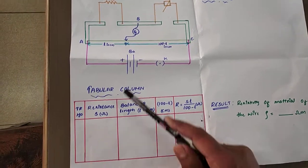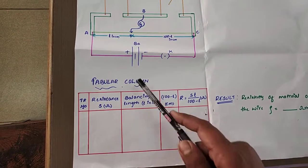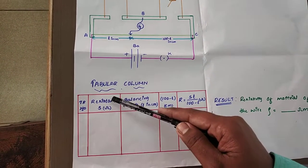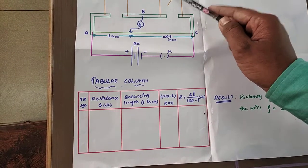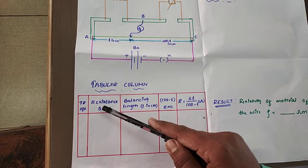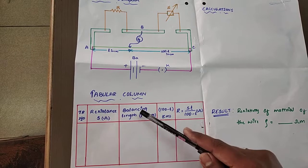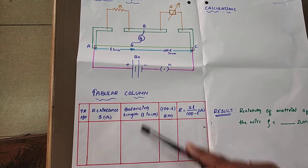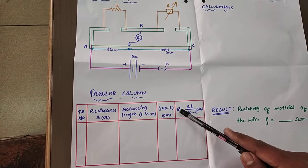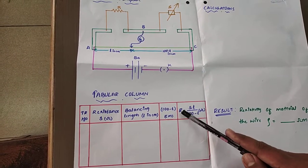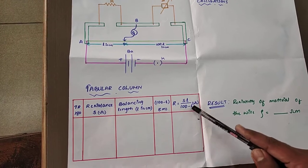Next is the tabular column. The columns are: resistance (S) value, balancing length (L), 100 minus L, and R = S × L / (100 − L), where we substitute values to calculate resistance.